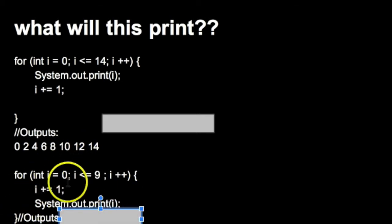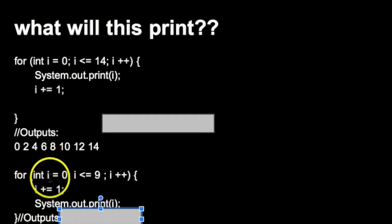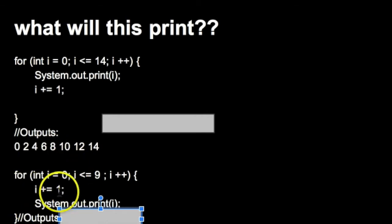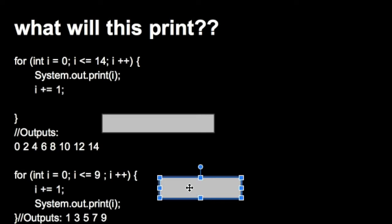In another example, we're incrementing first and printing after. The for loop initialization sets i equal to zero, checks if it's less than or equal to nine, then inside the loop body it increments with i plus equals one, so i becomes one, then prints. Then it goes back up, increments to two, comes down and increments to three, prints three. Because we have two increment operators, it skips every other number. Similar to the first for loop, from zero to nine it prints out every other number because we're incrementing twice.